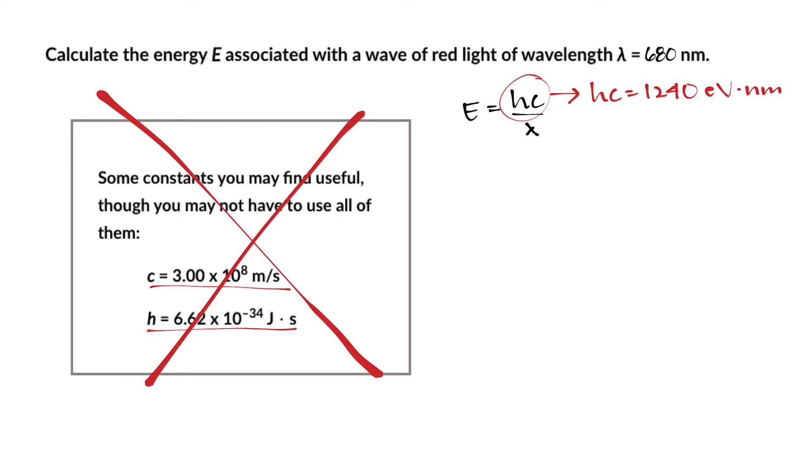Going back to the actual problem of the red wavelength that we've been given, you have E equals 1240 eV nanometers divided by the wavelength in the problem which is 680.